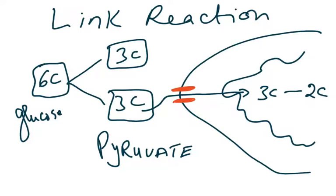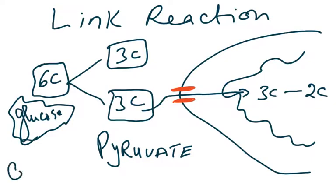We start the link reaction as we did glycolysis in the previous lectures. In the link reaction, the six-carbon glucose is broken down by the process of glycolysis into two three-carbon pyruvates.